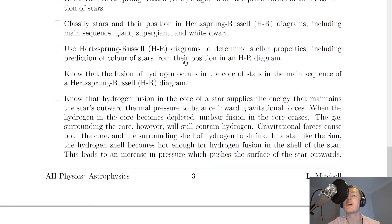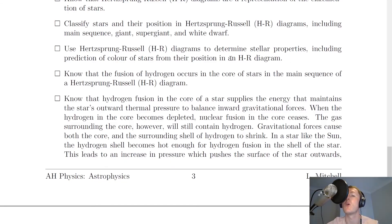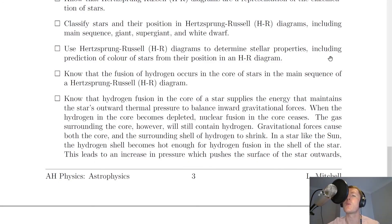You also need to use HR diagrams to determine stellar properties, including predicting the colour of stars from their position in the diagram. This is essentially the reverse: if a star is in a certain region of the HR diagram, you should be able to work out roughly what its brightness, temperature, luminosity and colour are going to be.